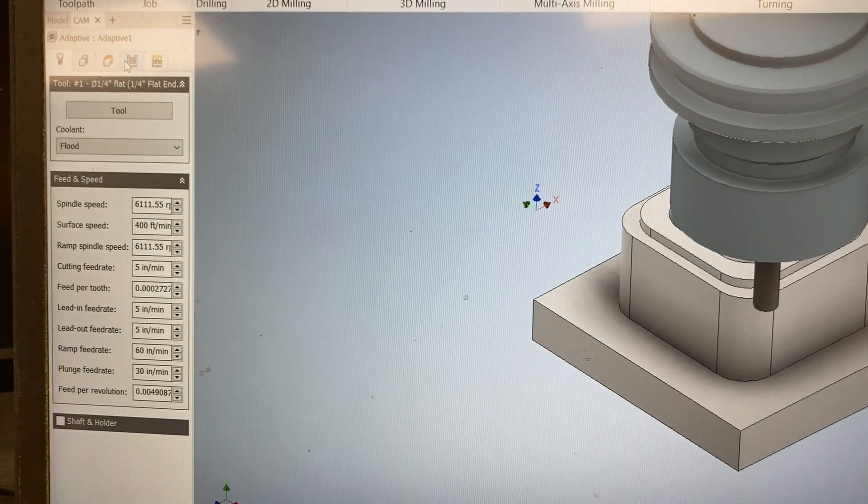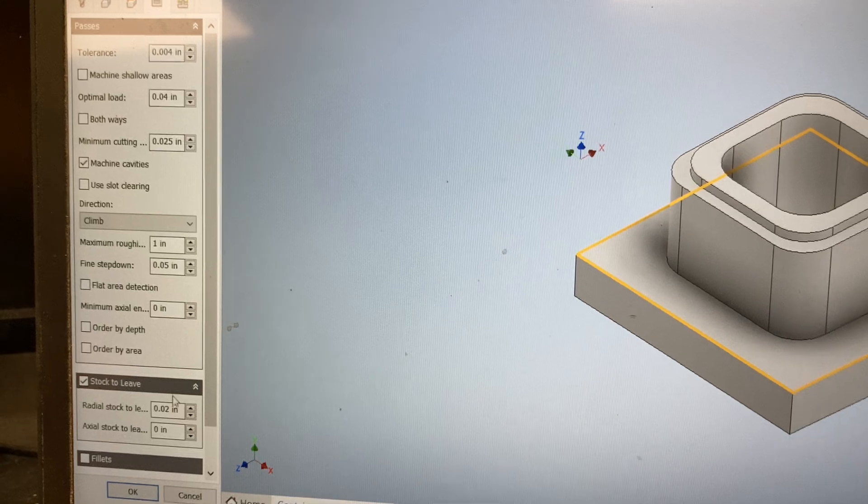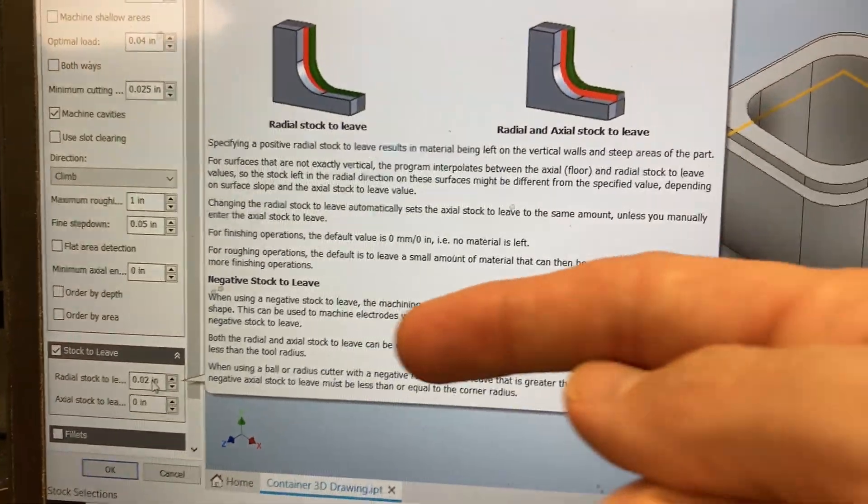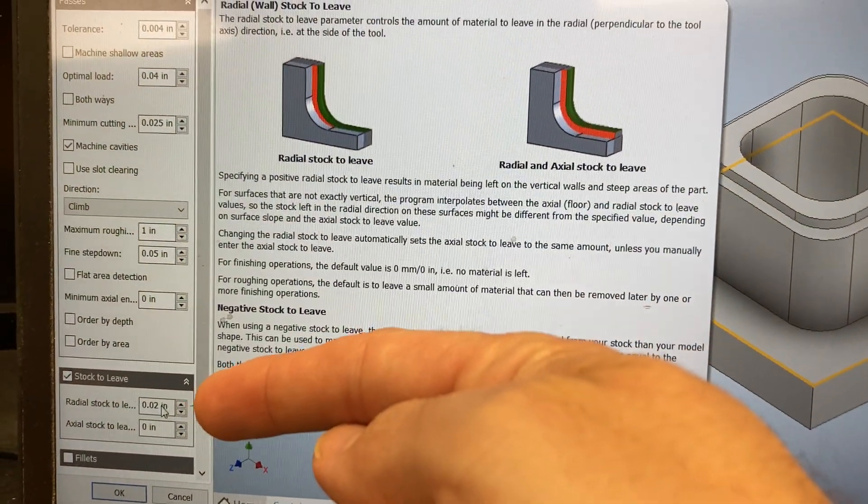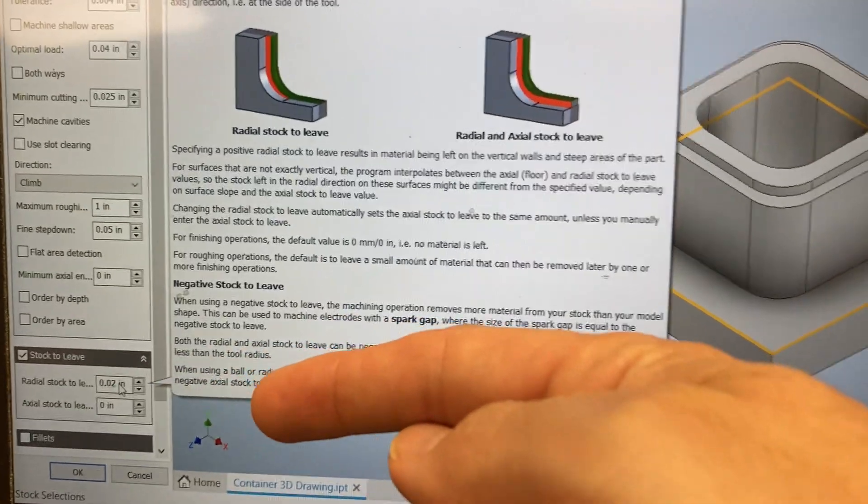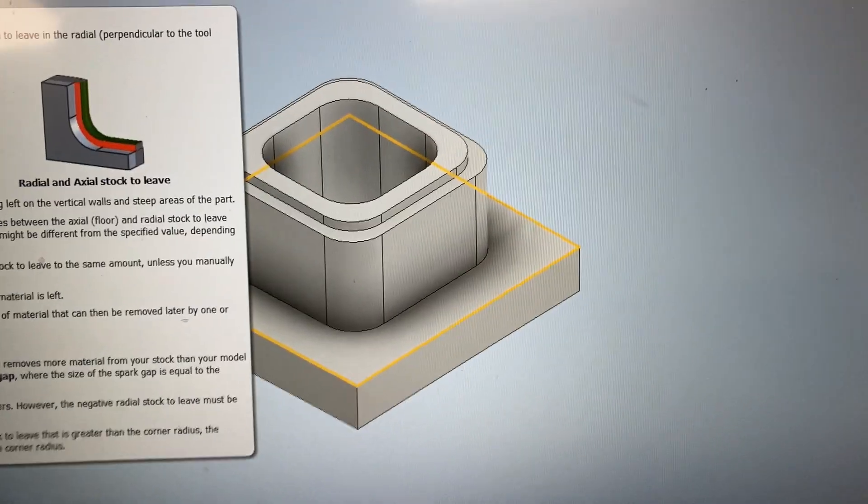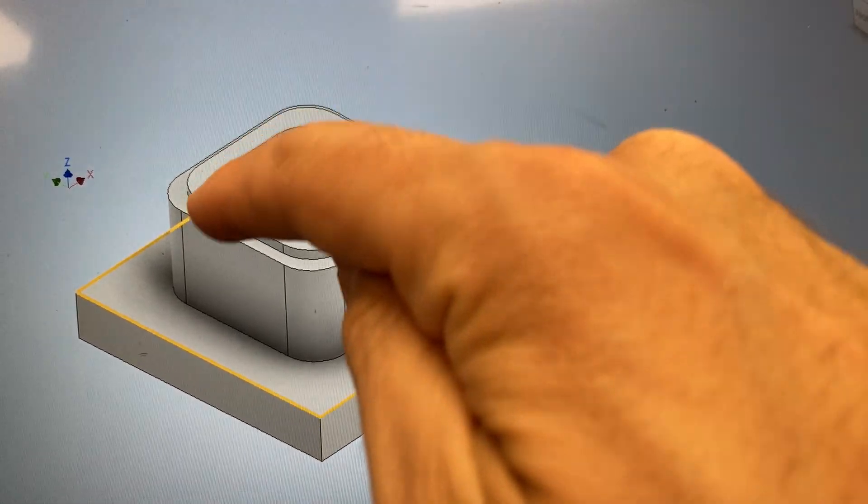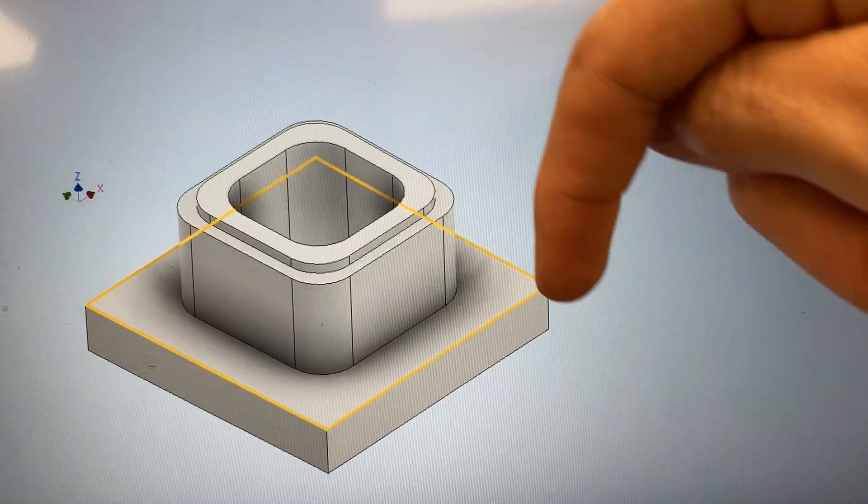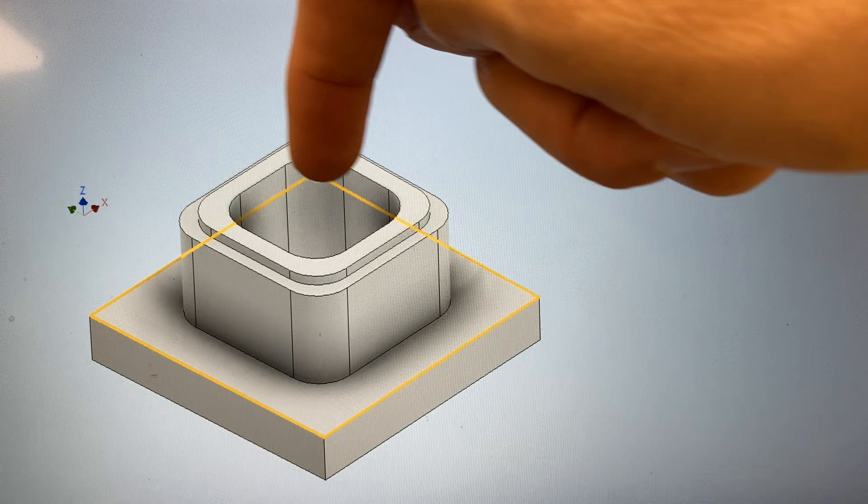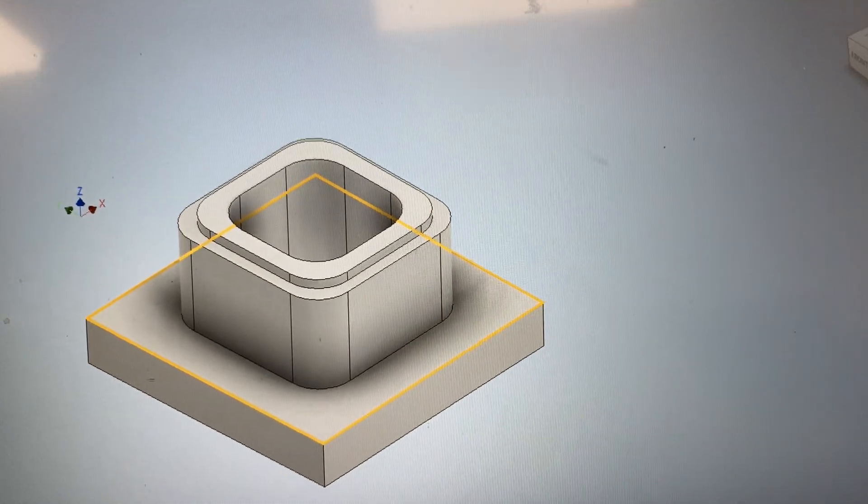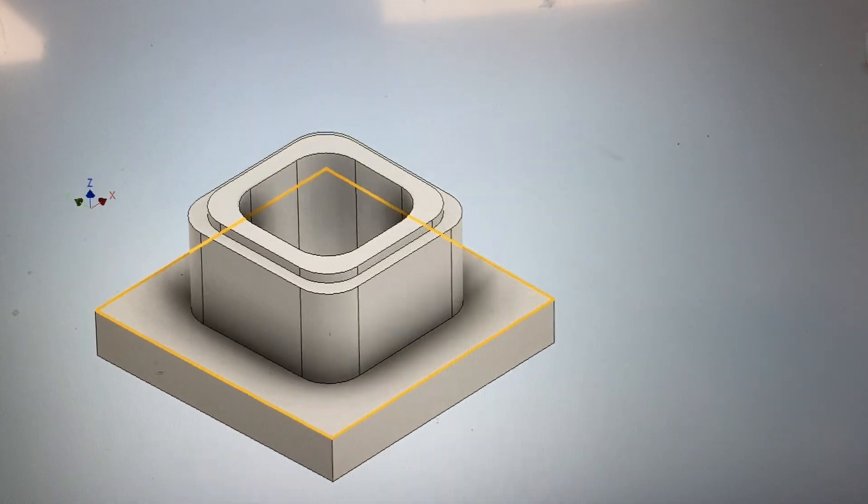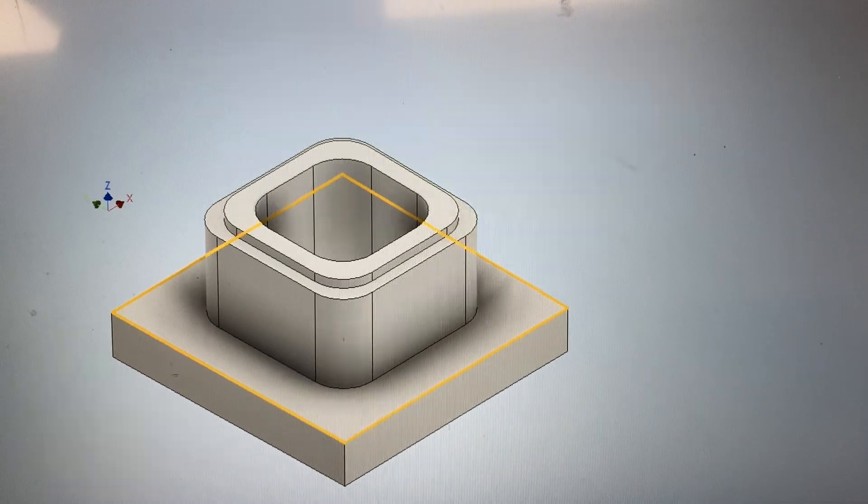And this is that in our passes, we are intentionally leaving 0.02 inches in our radial stock to leave. That means that this thing is going to have just a little bit of extra material left around its edges. And that's so that we can do a fine pass around at the end to clean this up and make sure that it cuts gently and smoothly.